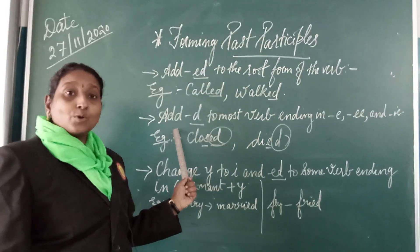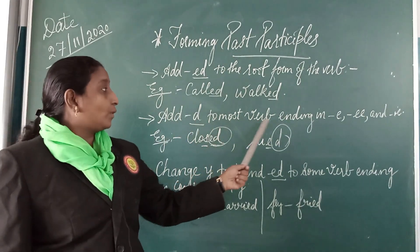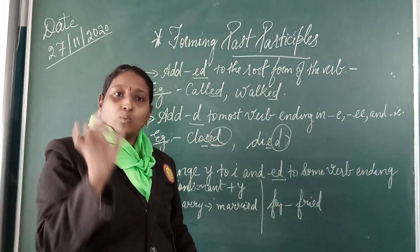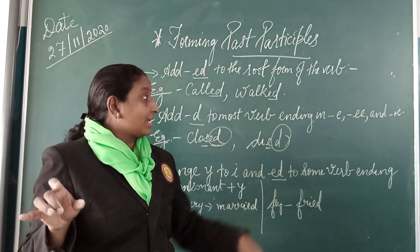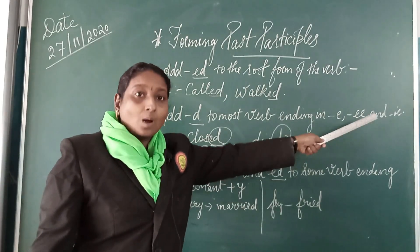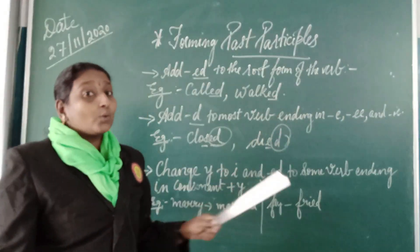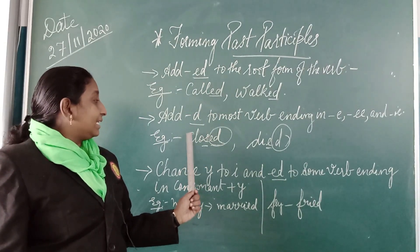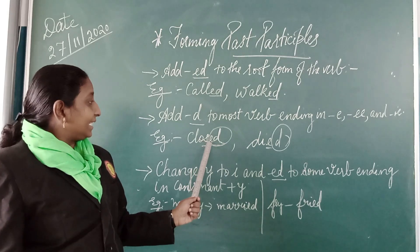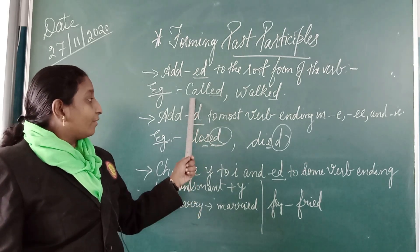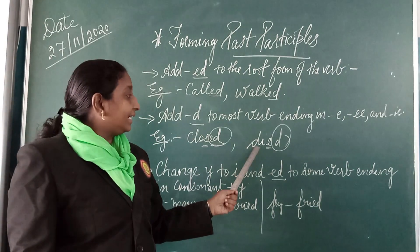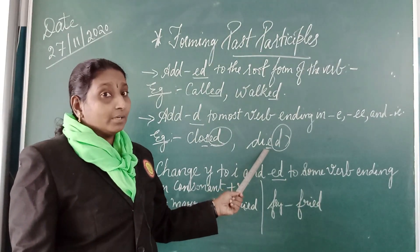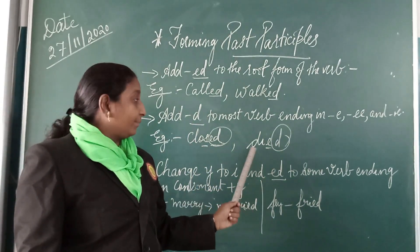The next rule: when the verb ends in E, double-E, or I-E, add only D. Suppose a verb ends with E — like 'close,' spelled C-L-O-S-E — you just add D to get 'closed.' Similarly, the verb 'die' spelled D-I-E — you add D to form the past participle 'died.'